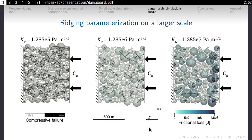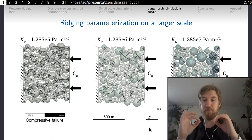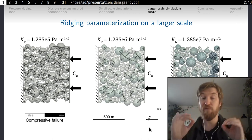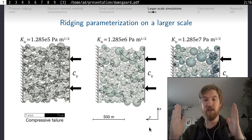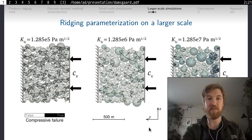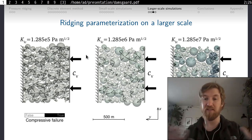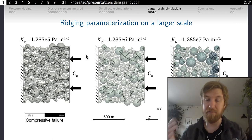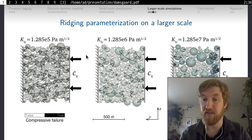We then take this ridging parameterization into a larger scale model. This is a plan view model where each individual ice particle represents an ice flow floating on the ocean surface. In this setting, the granular assemblage of ice flows is compressed, here from one side, and we observe how the ridging is distributed within this ice pack. It turns out that the magnitude of the fracture toughness is fundamental in controlling the distribution of strain and the bulk strength of the ice pack.